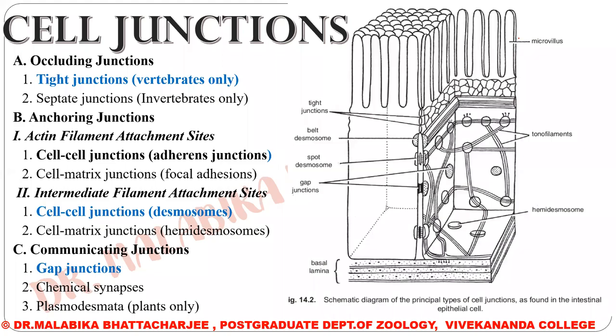We will be doing cell junctions. When we are talking about junctions, we will be restricting ourselves to occluding junctions. The cell membranes of two adjacent cells are placed so close to each other that any space between the membranes is occluded out.